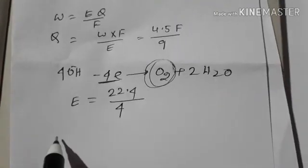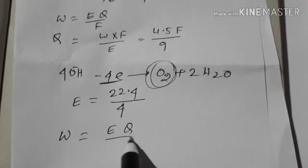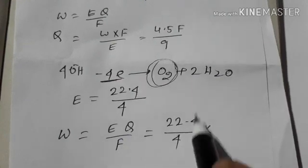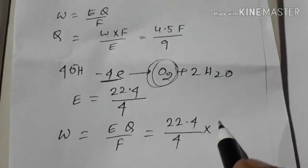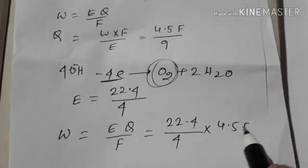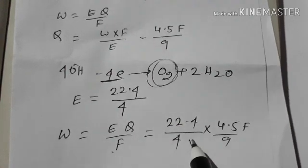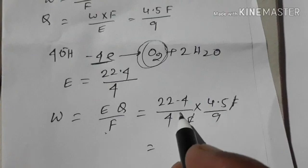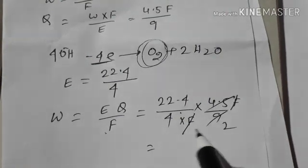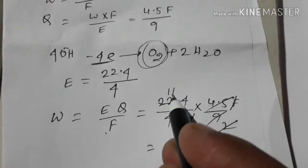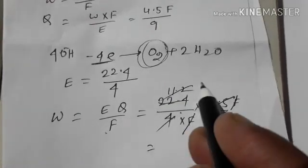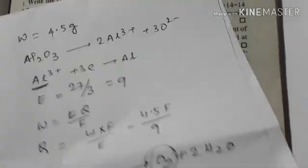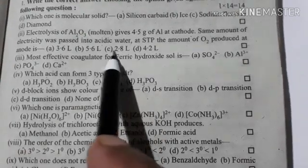So this equation gives: W = 4.5 g, F = 9, so the calculation is 1.2 and this is 2.8 L. That is 2.8 L — this is the right answer, that is option C.